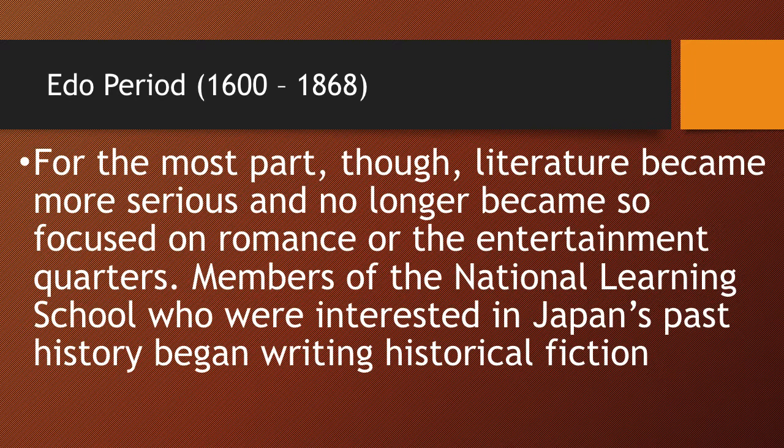Literature no longer focuses on romance or the entertainment quarters — that was the first half of the Edo period. The second half is a lot more serious. Many history books are written, and members of the National Learning School, obsessed with Japan's past, begin writing historical fiction set in past eras. The literature of this period is a lot more conservative and somber, thanks to Neo-Confucianism.